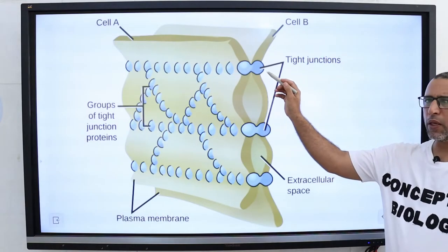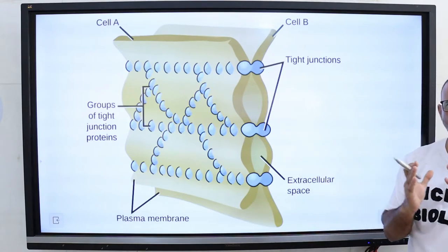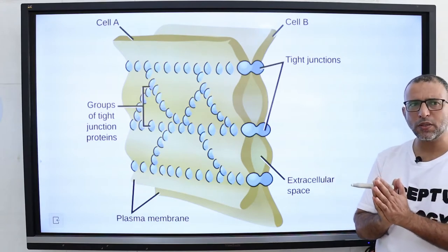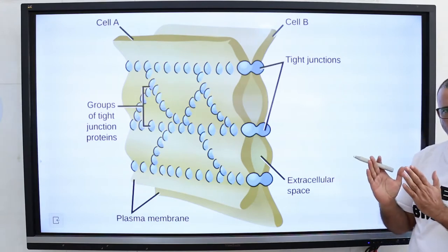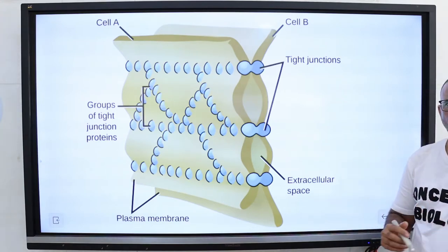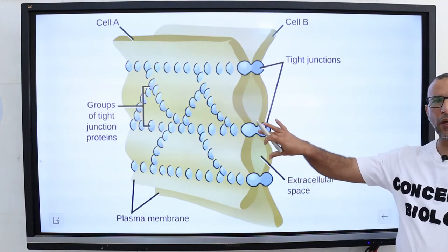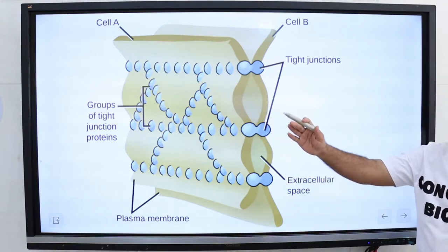Tight junction is a belt-like adhesive seal that selectively limits the diffusion of water, ions, and large solutes between epithelial cells. This allows the epithelial cells to separate the interior of the body from the external world.